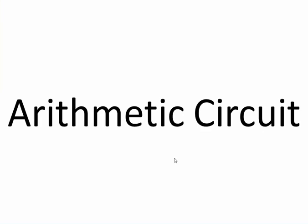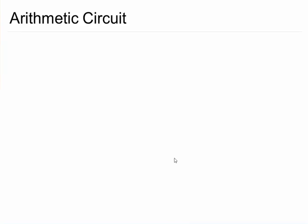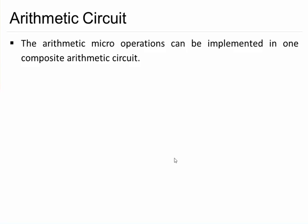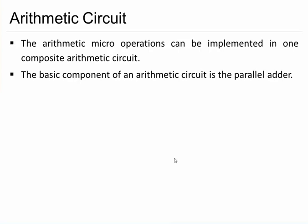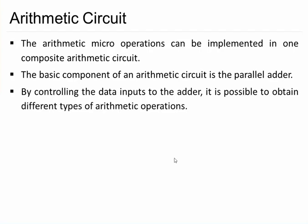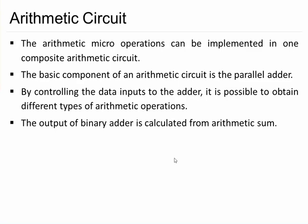In this session we'll discuss arithmetic circuits. All the arithmetic micro-operations we have discussed separately — binary adder, binary incrementer, binary adder-subtractor — now we want to design a single circuit that can combine all these operations, so we do not need to implement them separately. We require full adders placed in parallel, and by controlling the data inputs to these parallel adders we get different arithmetic micro-operations. The formula is D = A + Y + Cin, where A is a fixed input and Y is a multiplexed input, so by changing the value of Y we get different arithmetic micro-operations.